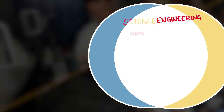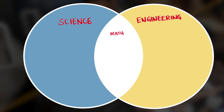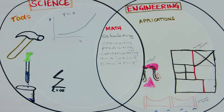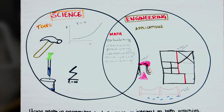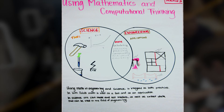Science and engineering have different outcomes as well. The goal of science is to construct explanations for the cause of phenomena, but the goal of engineering is to design a solution to the problem you've identified.